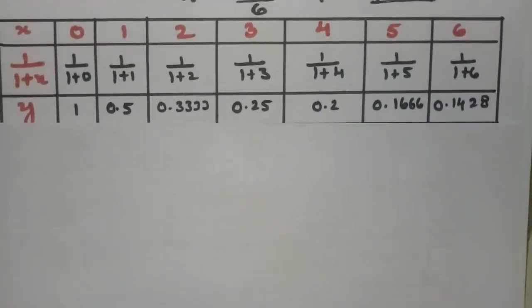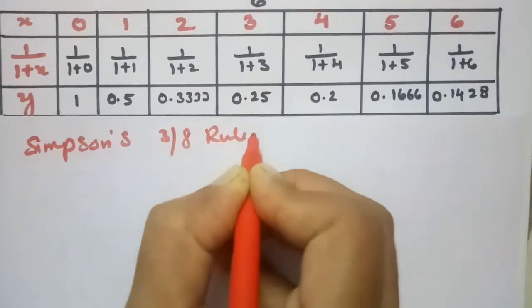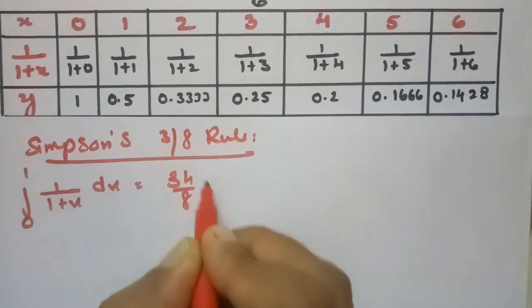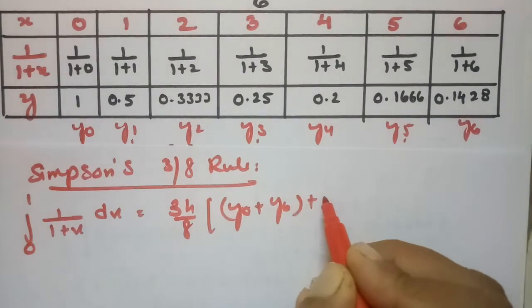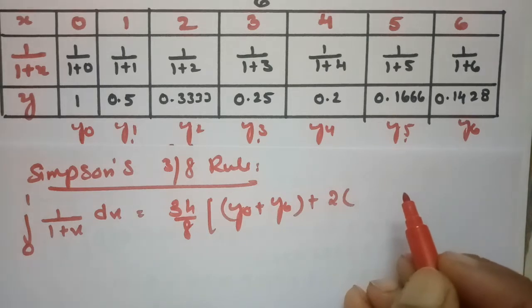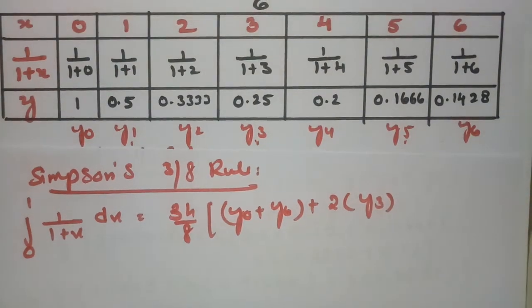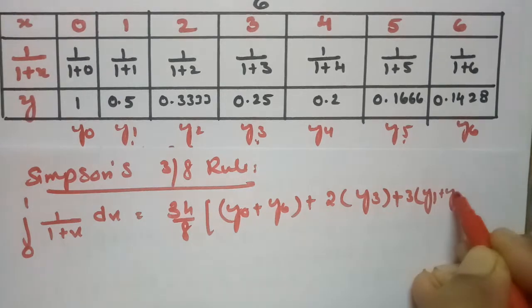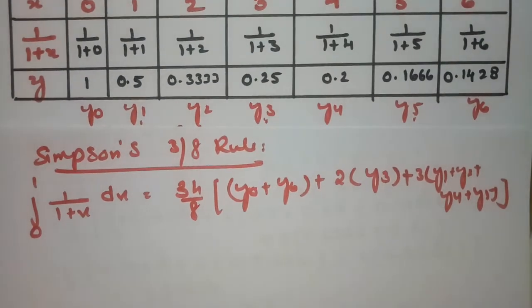According to Simpson's three-eighths rule, the formula is: (3h/8) × [(y₀ + y₆) + 2×(multiples of 3, i.e., y₃) + 3×(the rest: y₁, y₂, y₄, y₅)]. So it is 3h/8 times the first plus last ordinate, plus 2 times y₃, plus 3 times y₁, y₂, y₄, and y₅.